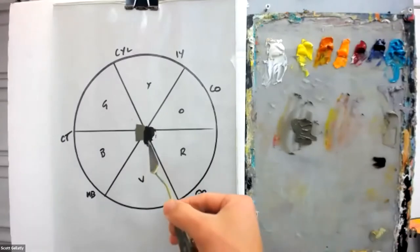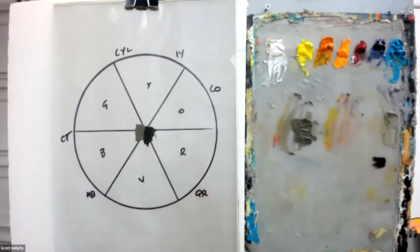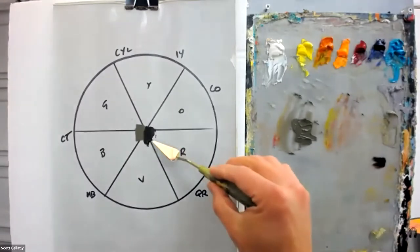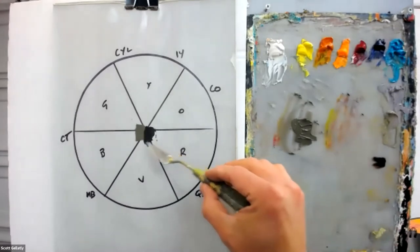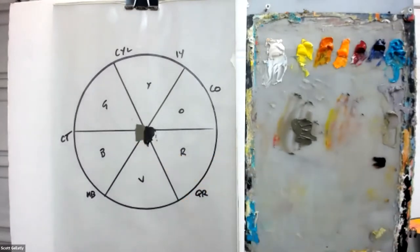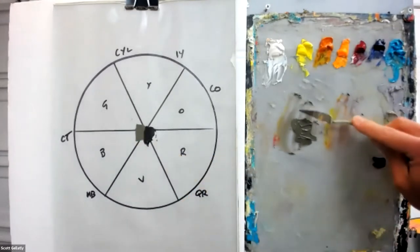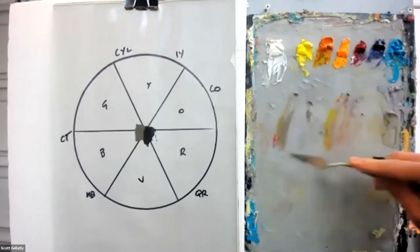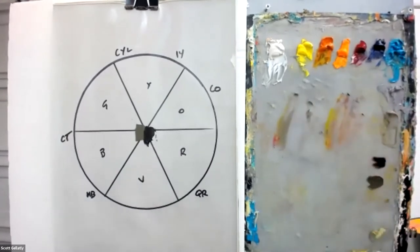And so we're going to get a much greater value depth and value with those dark values, mixing with transparent pigments rather than opaques. And this is a natural characteristic of the pigments themselves.